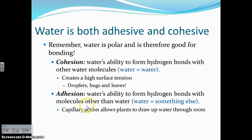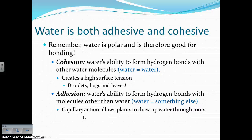Adhesion describes water's ability to form hydrogen bonds with molecules other than water. The benefit of adhesion allows for capillary action, which allows plants to draw water up from the depths of the soil to the very top leaves. The water sticks to the vascular tissues of the plant to travel upward, while cohesion keeps it bonded to itself inside those vascular tissues.